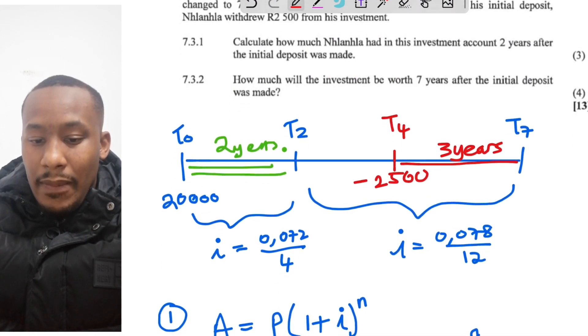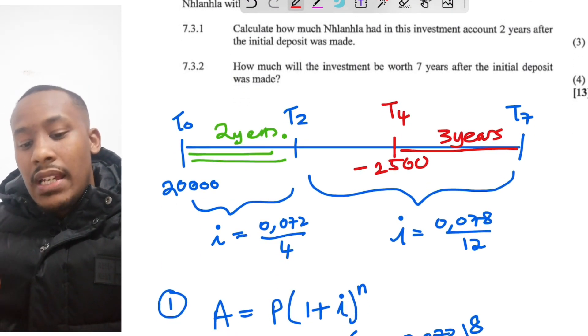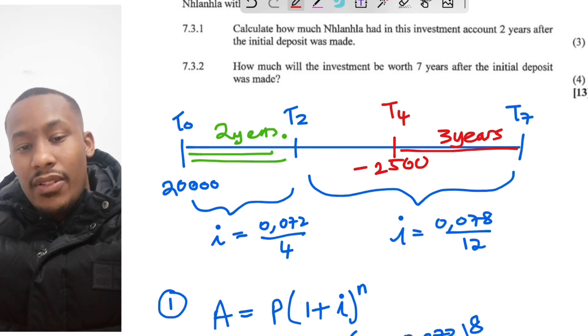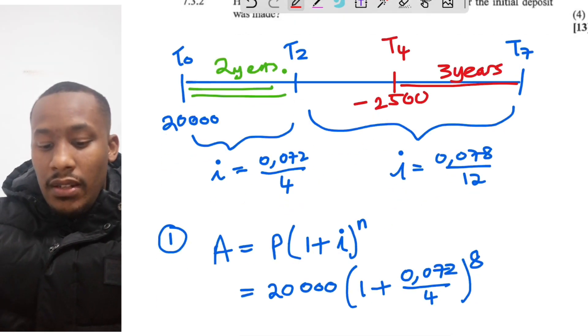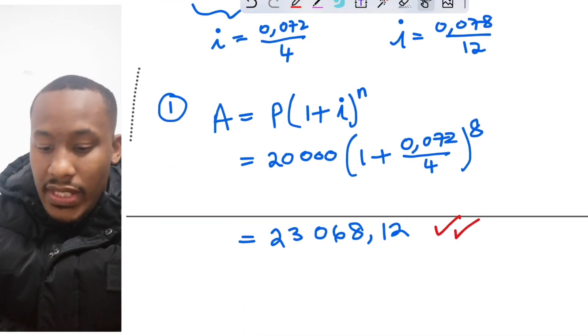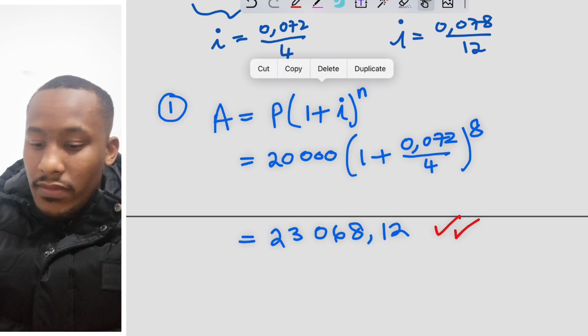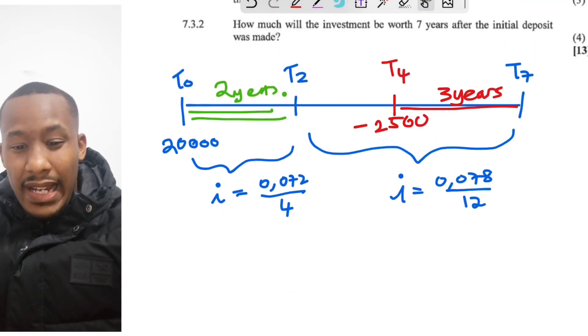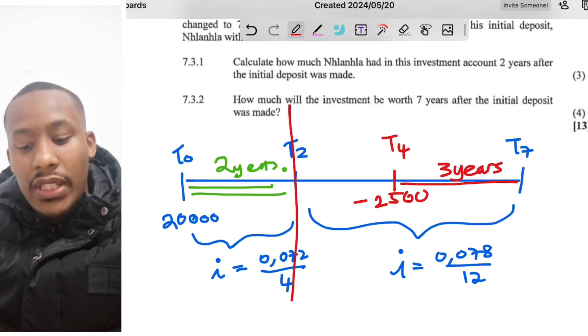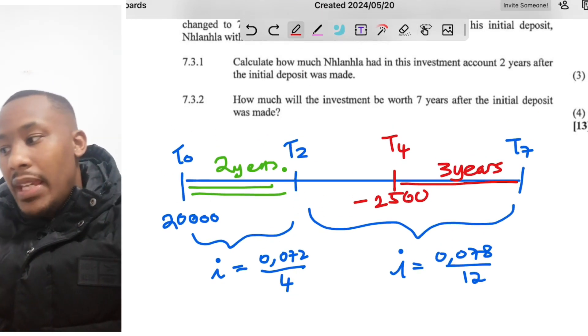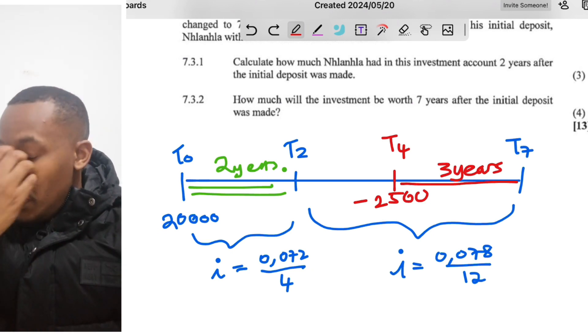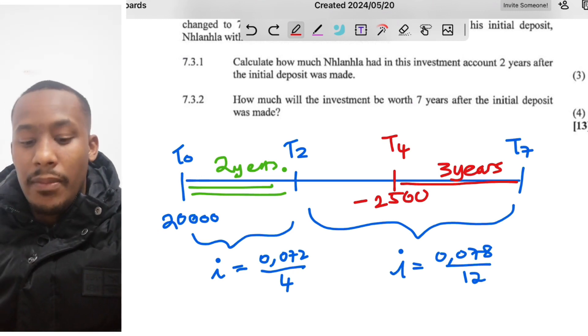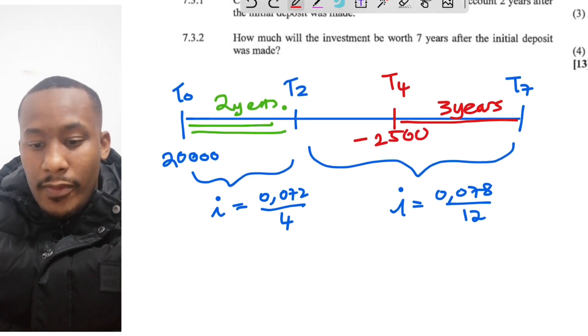Now for the second part of this question which says how much money will the investment be worth after seven years from the initial deposit? Well, let me erase all of this, I'm going to do it from scratch. Because I could work from where we were at, like I could start my calculation from this point, but maybe another question you might be faced with, they don't give you that in-between question, so then you'll have to know how to do it from scratch as well. So I'll show you.